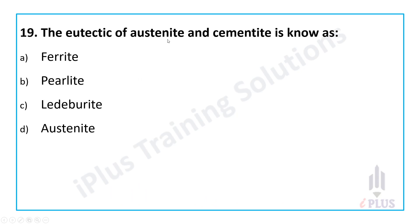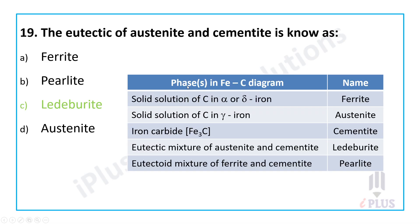Question 19: The eutectic mixture of austenite and cementite is known as ledeburite. Key phases in the iron-carbon diagram: ferrite is alpha iron (BCC, very low carbon); austenite is a solid solution of carbon in gamma iron (FCC); cementite is iron carbide (Fe3C). The eutectoid mixture of ferrite and cementite is pearlite, while the eutectic mixture of austenite and cementite is ledeburite.